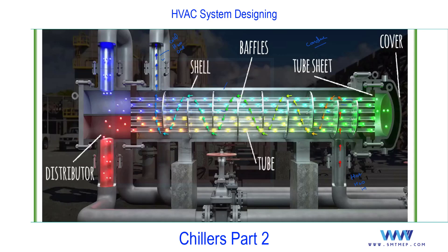Water enters and exits through the shell, not the tube. Inside the shell you'll find baffles. Baffles guide the water — without them, water would just create turbulence. The baffles direct the water to flow up then down along a defined path, so it can exchange heat efficiently. This is the construction of the shell and tube heat exchanger.